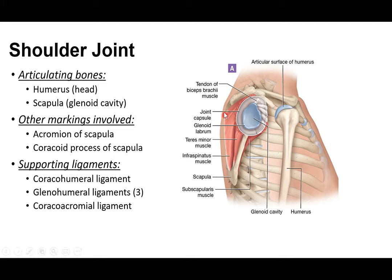Surrounding the glenohumeral joint is the joint capsule — a translucent structure with an outer fibrous layer and an inner synovial layer. The joint capsule engulfs the entire humeral head and extends all the way down to the anatomical neck of the humerus. Together with the glenoid cavity, it forms a spherical space around the humeral head.